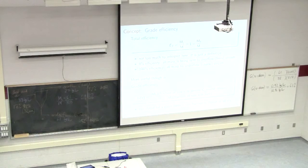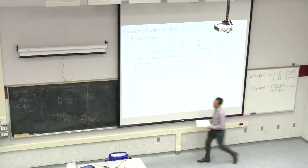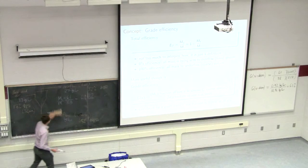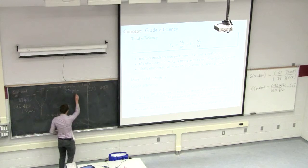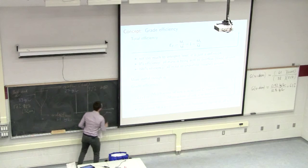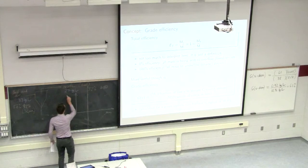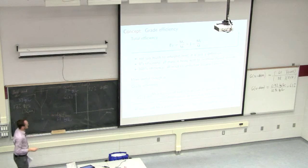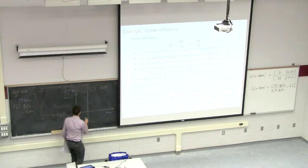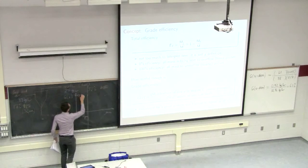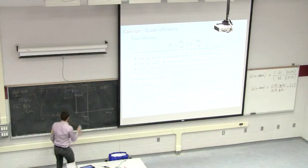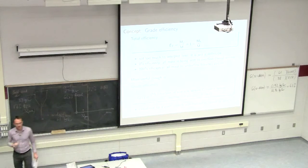That number is 6.1%, but let's interpret it. The grade efficiency is calculated for every size fraction. We can make a plot with size fraction on the horizontal axis and G(X) on the vertical axis — a number between 0 and 100%. At 32 microns, which is a very small particle size, G(X) is 6.1%, giving us a single data point. We can then go to different size fractions to fill out the curve.